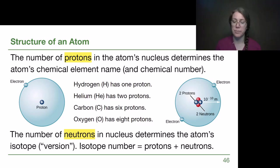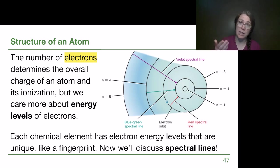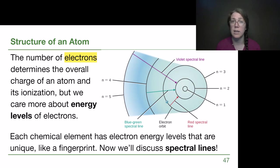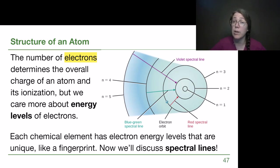The number of electrons determines the overall charge. When we compare how many electrons to how many protons, we can determine whether we have a positive ion or a negative ion. That term 'ion' just describes the fact that they aren't matching each other in a neutral atom. What we really care about in astronomy is not the number of electrons, but rather where electrons are found and how they are moving to different energy levels.